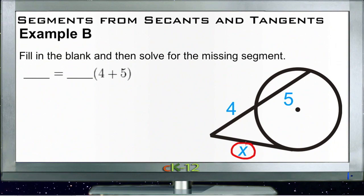Remember, our theorem says we're going to take the tangent segment multiplied by itself, and then we take the outside segment of the secant line and multiply it by those two segments together. So for our equation here, we're going to have x times itself, and that'll be equal to 4 times 4 plus 5.